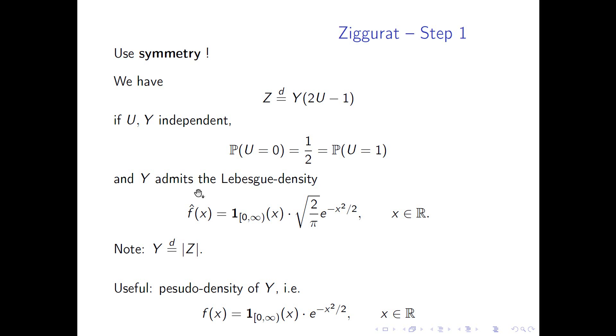So having this preparation, we can start with the Ziggurat method. The Ziggurat method will consist of several steps, more precisely five. And the first one is to exploit symmetry. The first thing what we are doing is, well, set the standard normal random variable. And we can express Z in distribution by this product of random variables. So Y is a random variable here. And Y has this Lebesgue density. And if you look a bit more precisely on this Lebesgue density, you can see it's the Lebesgue density of the absolute value of Z.